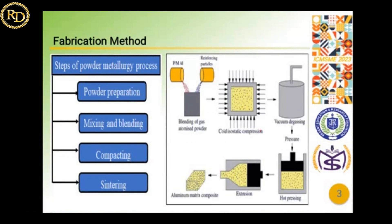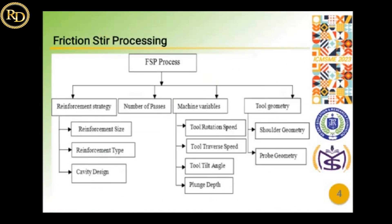The first method is the powder metallurgy process. It is divided into four stages: first, powder preparation; second, mixing and blending; third, compacting; and fourth, sintering. Here is a diagram showing the various stages of the powder metallurgy process.